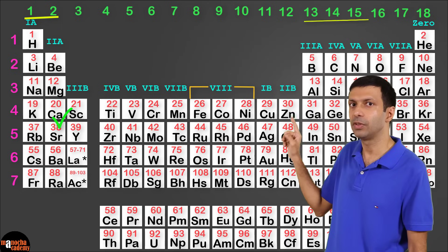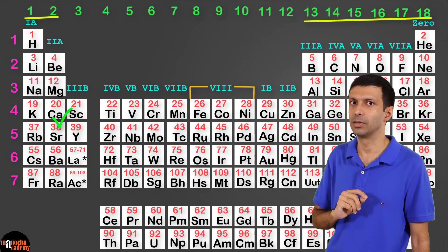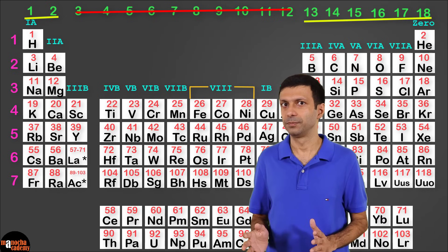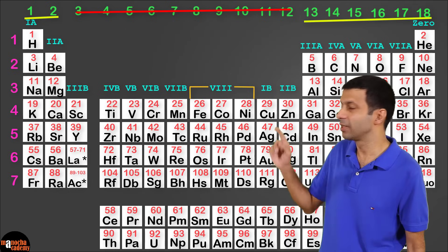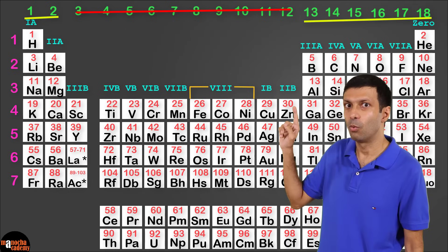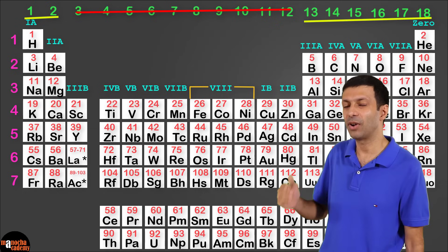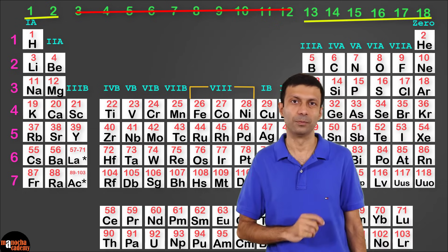Now if you look at the old scheme, what you have in your syllabus is IA, IIA and then IIIA, IVA, VA, VIA, VIIA and group 0.